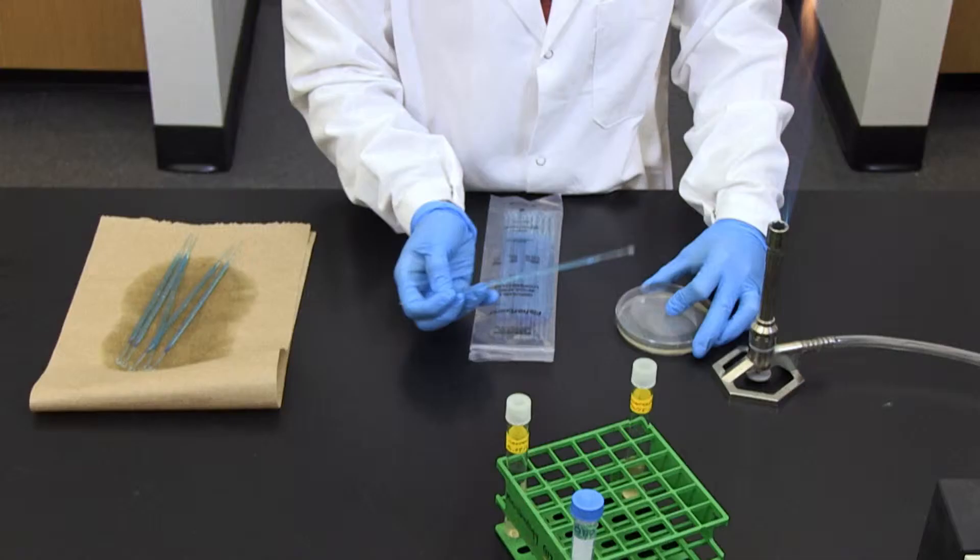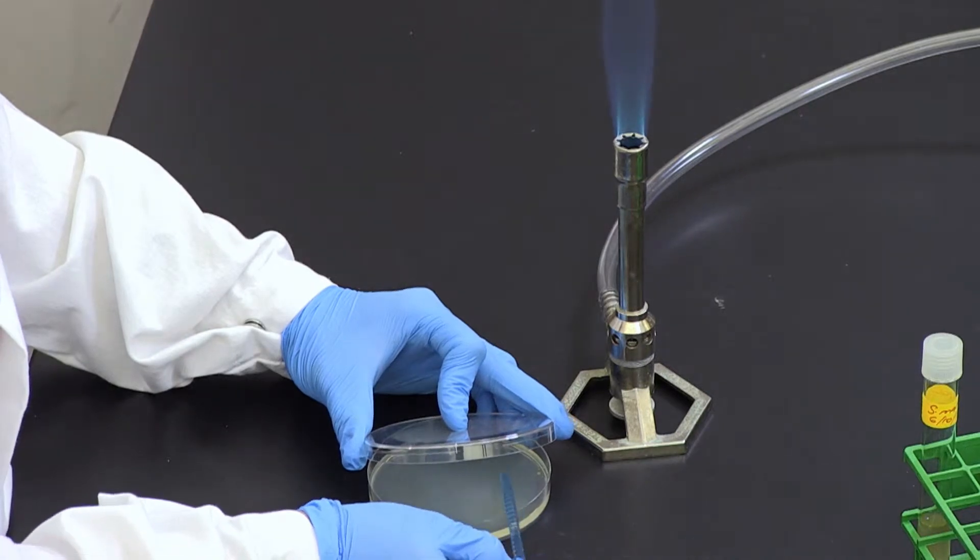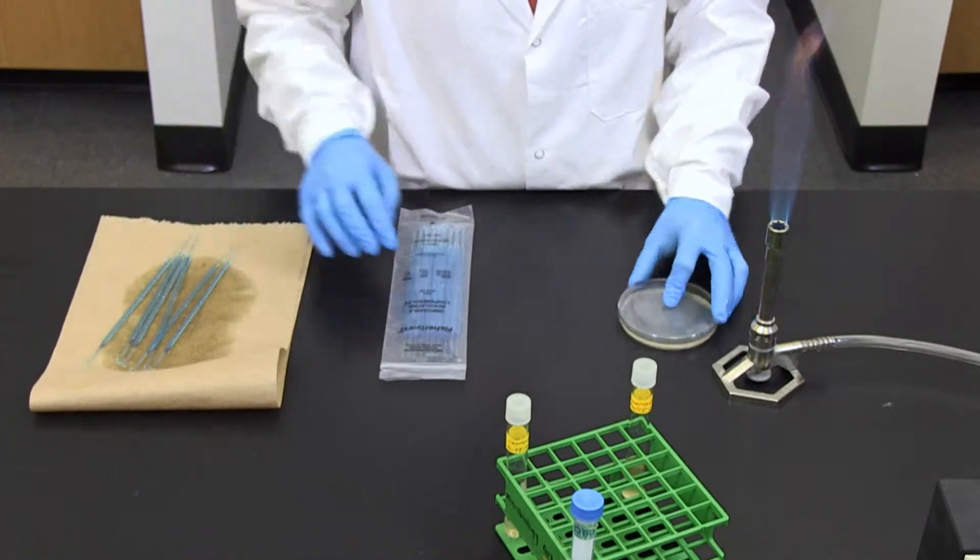Radiant Streak. First, streak the inoculating loop full of microbes in a small area near the edge of the plate in area 1. Apply lightly to avoid gouging into the medium.